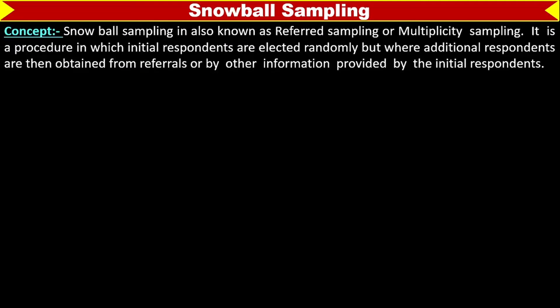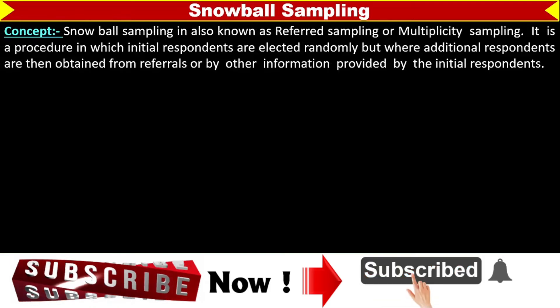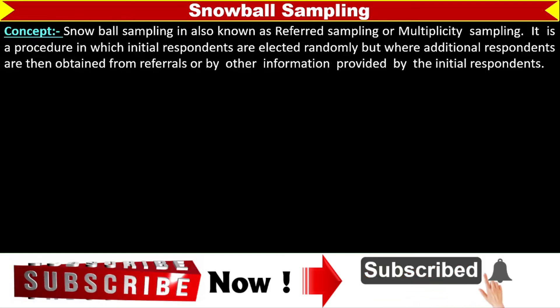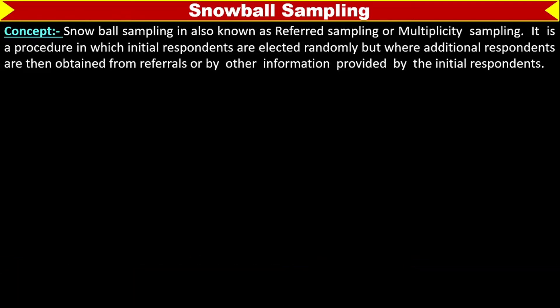Snowball Sampling is also known as Referred Sampling or Multiplicity Sampling. It is a procedure in which initial respondents are selected randomly, but where additional respondents are then obtained from referrals or by other information provided by the initial respondents.